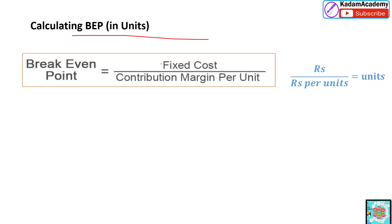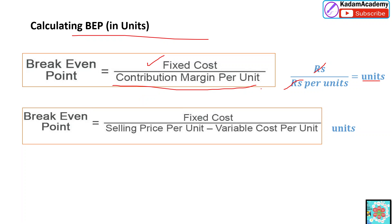The formula for break-even point in units is: Fixed Costs divided by Contribution Margin per Unit. The fixed cost value is given, but contribution margin per unit is not directly given. Since fixed cost is in rupees and contribution margin per unit is in rupees per unit, the rupees cancel out and the result comes in units.